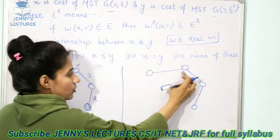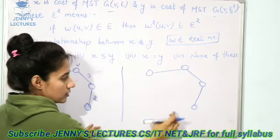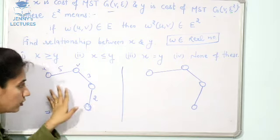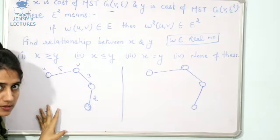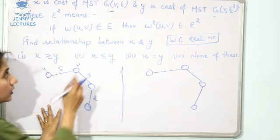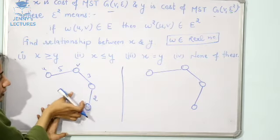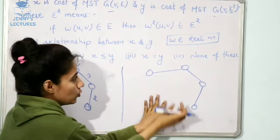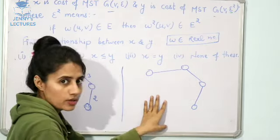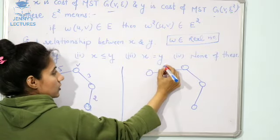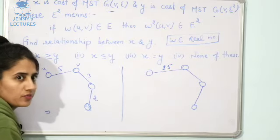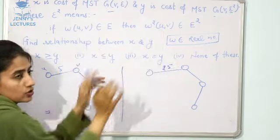E² means the set of edges in this second MST. And E is set of edges in first MST. Set of edges means E has 1, 2 and 3 - three edges. Obviously, E² also has 1, 2 and 3 edges. Now, the weight of this edge would be 25 according to the given condition.